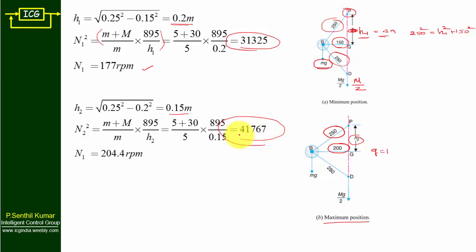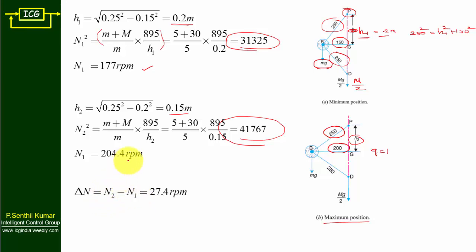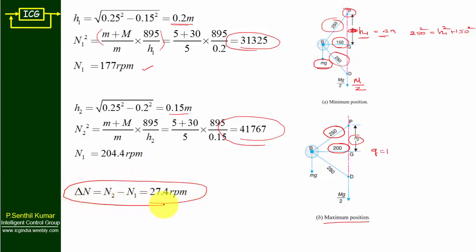Applying the formula: n2² = [(m + M) / m] × (895 / h2). Taking the square root gives n2 = 204.4 rpm. Now with n1 and n2, the range of speed is delta-n = n2 − n1 = 204.4 − 177 = 27.4 rpm. This is the range of speed without considering the effect of friction.